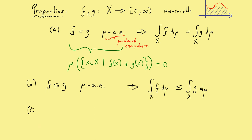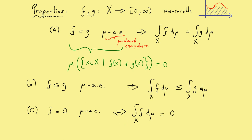And now to the last property, which is related to the first one. I want my function f to be zero mu almost everywhere. By using property (a), I know that the integral of f is therefore also zero, because the integral of the zero function is zero. However, here I want to emphasize another direction: if the function has an integral of zero, then we already know that the function has to be zero mu almost everywhere. Please don't forget that we only consider non-negative functions here, so all the areas we consider are above the x-axis and therefore positive. Therefore there is no cancellation whatsoever with positive and negative areas here.